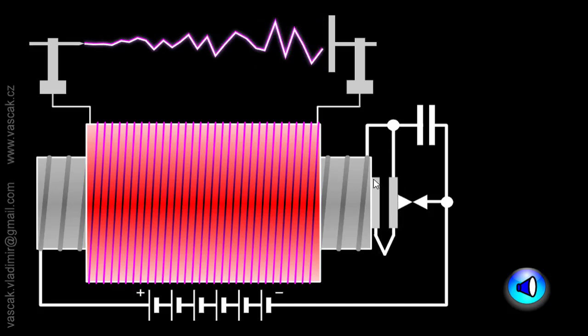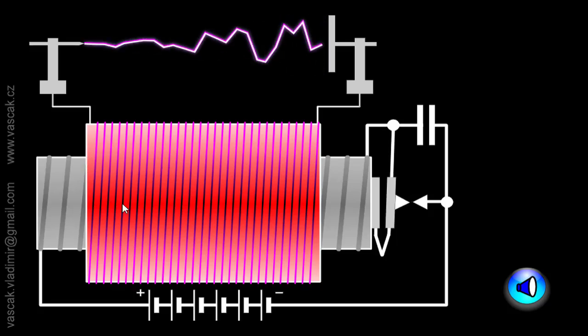Now here this inner coil has less number of turns and this outer coil has more number of turns. The inner coil is wound on the iron core. So it is similar to transformer.